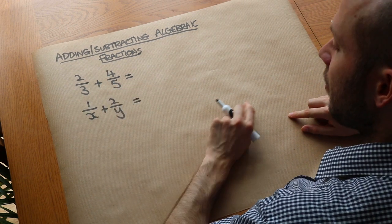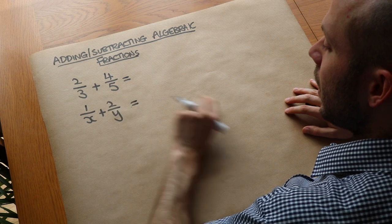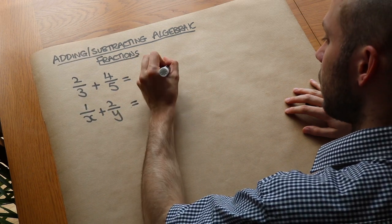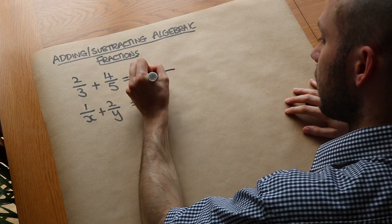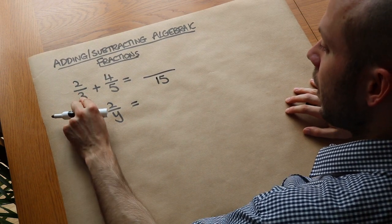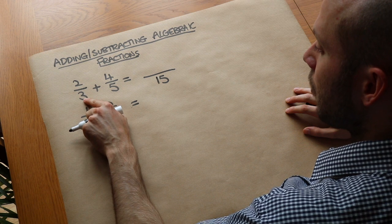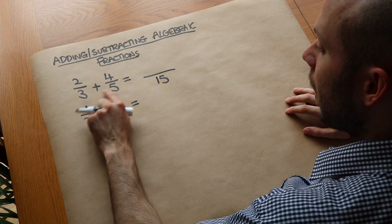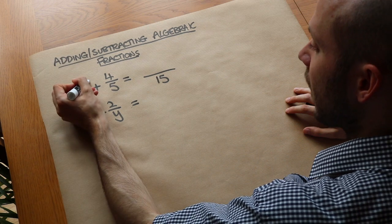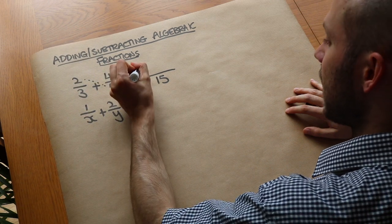Well, one method that would work is to multiply together the denominators to get a common denominator — so we could do it all over 15. Now, 2 over 3 is going to be what over 15? Well, if we times that 3 by 5, we also have to times the 2 by 5. So we almost diagonally multiply this 2 by the 5, which would be 10.